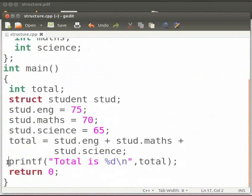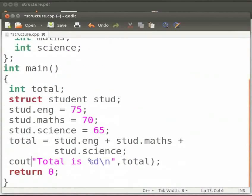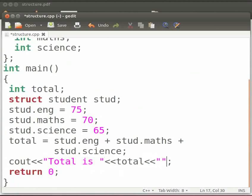At the end we will replace the printf statement with the cout statement. Delete the format specifier and backslash n. Now delete the comma. Type two opening angle brackets. Here delete the closing bracket and type two opening angle brackets, and within the double quotes type backslash n. Now click on save.